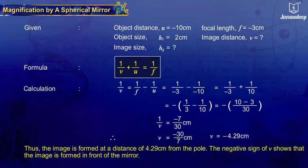Thus, the image is formed at a distance of 4.29 cm from the pole. The negative sign of V shows that the image is formed in front of the mirror.